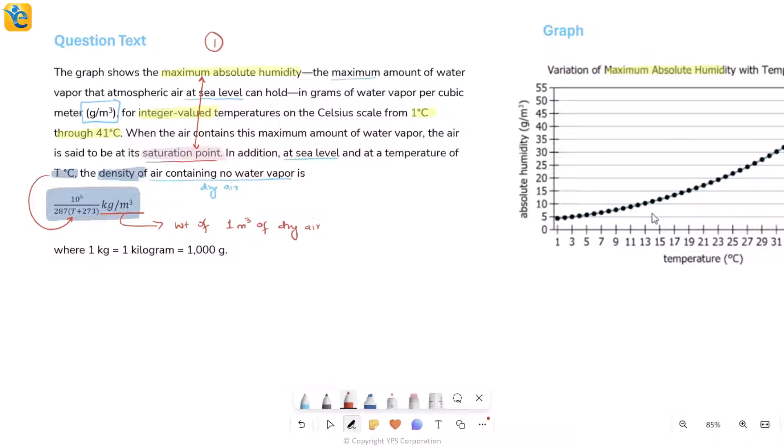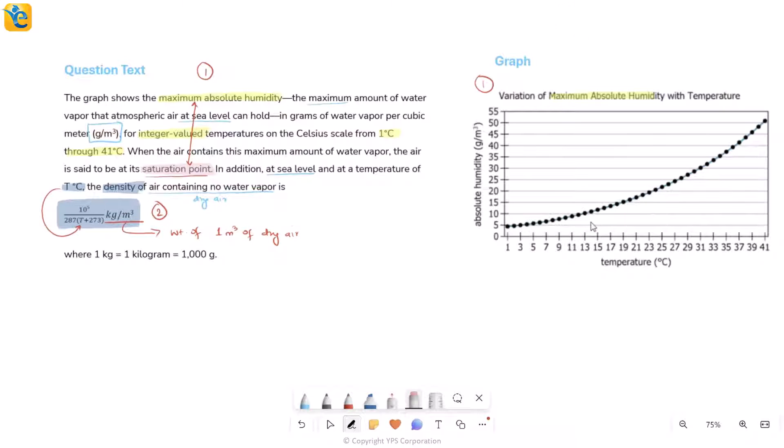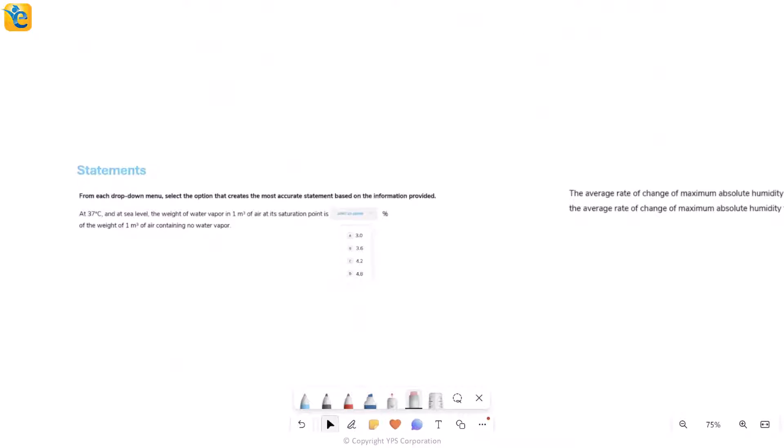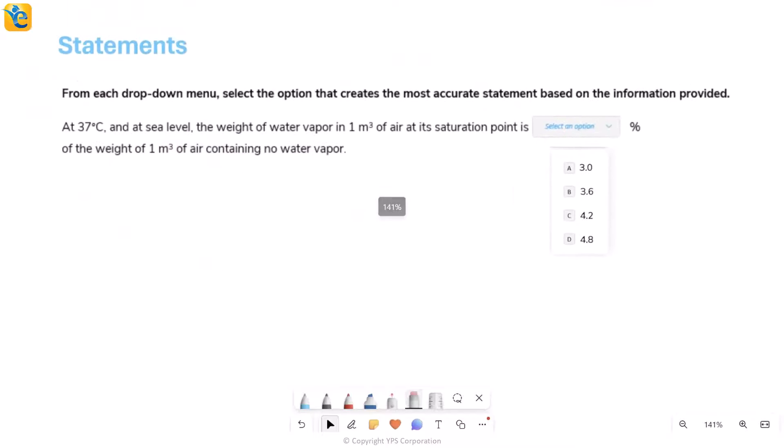Essentially, you have these two pieces of information. One about the maximum absolute humidity, which is also on the graph, and second piece of information is this thing about the density, which is not on the graph. Then we've understood the entire situation. Let's see what is asked. Question has two statements.